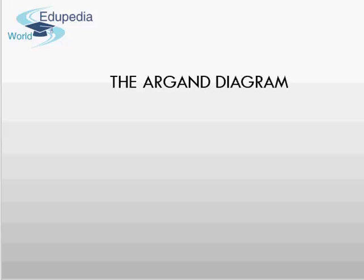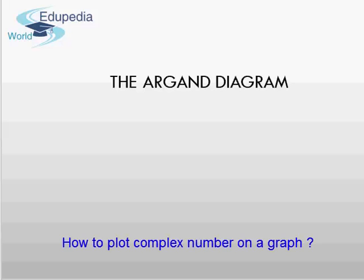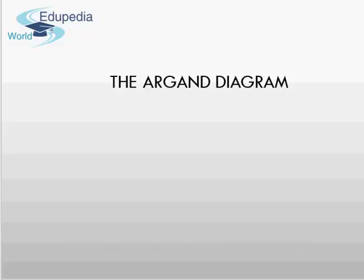Hey everyone, in this video we'll be talking about how to plot complex numbers on a graph. The only difference between a complex number graph and a real number graph is that the axes are not the x-axis and y-axis, but in fact the real and imaginary axis. We'll first go through the name of the diagram, called the Argand diagram, then see how a complex graph differs from a numbers graph, plot some complex numbers, do exercises on different types, and finally talk about how a conjugate affects the plotting on a complex graph.